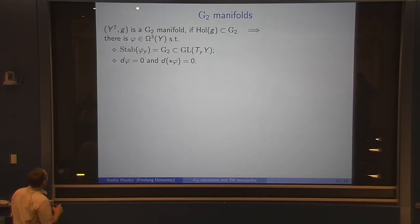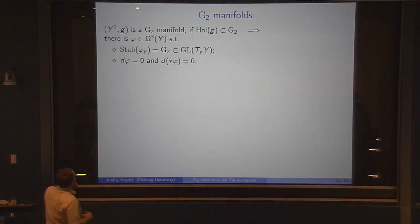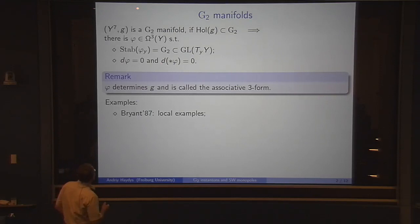In this talk, Y will always be a G2 manifold, which means that it's a Riemannian manifold with holonomy in G2. This means that there is a distinguished three-form on Y with stabilizer G2, and this three-form is covariantly constant, which translates into phi being closed and co-closed. Phi also determines G and is called an associative three-form.